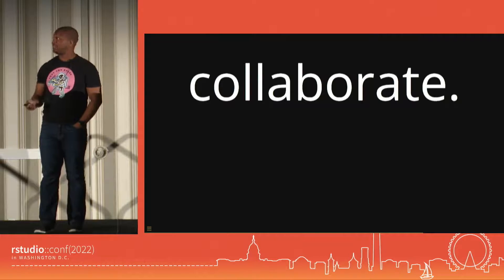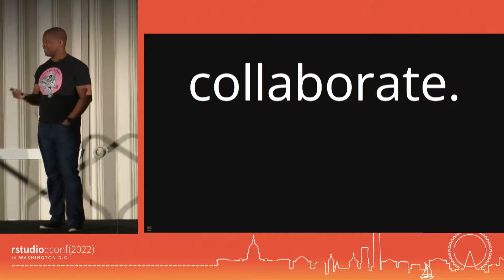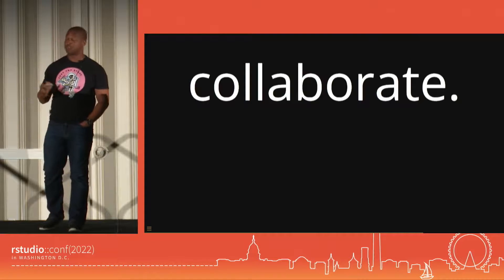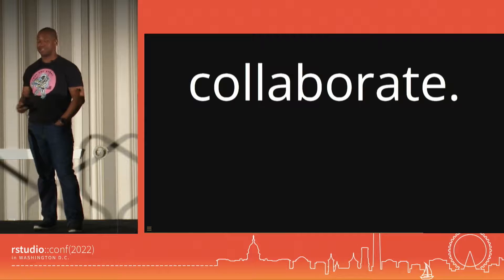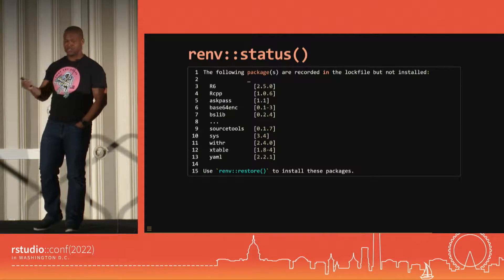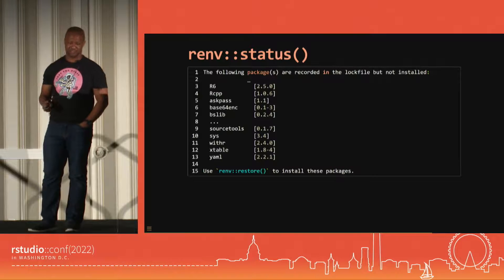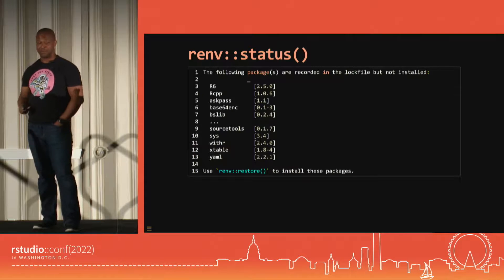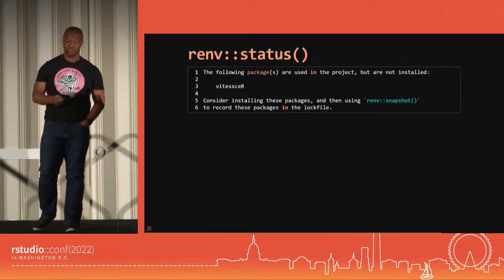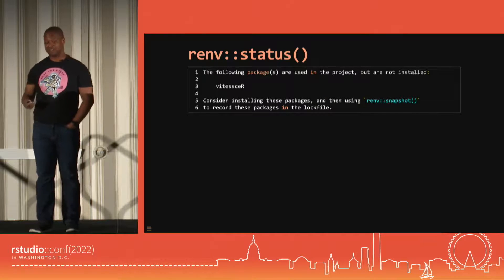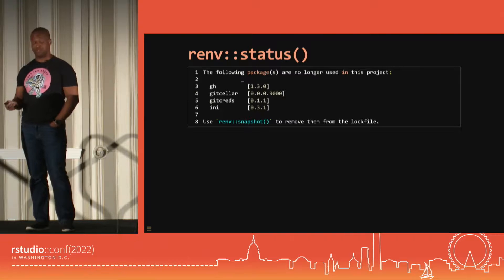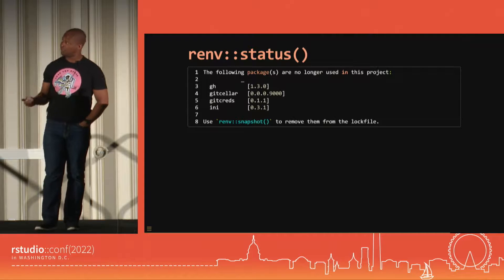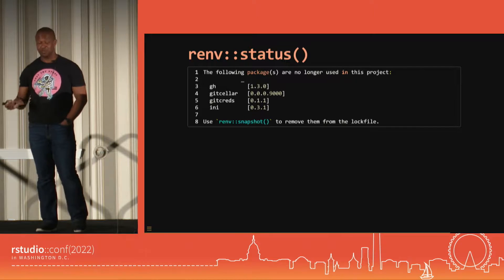The lock file enables more effective collaboration. renv is very helpful in giving you status messages about what to do next — useful when picking up an old project or sharing one with a teammate who doesn't have the same package set. If you've pulled down a lock file and the packages aren't yet on your system, renv will tell you what to do. Similarly, if you start using a package but haven't installed it, renv status will guide you. And if you remove a package, you want to remove those dependencies too so you don't ship unnecessary things to your deployment target.